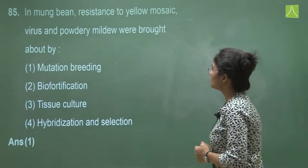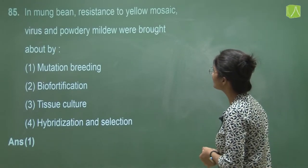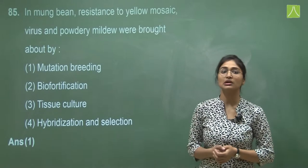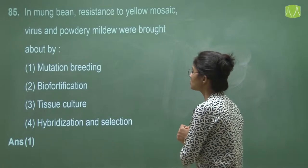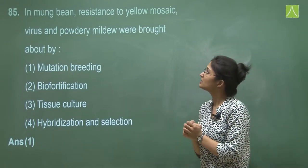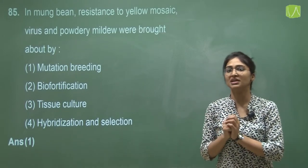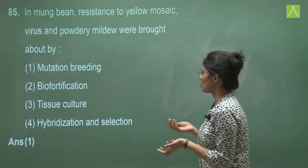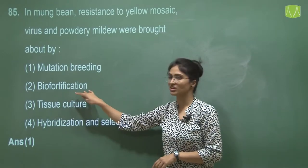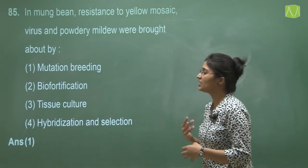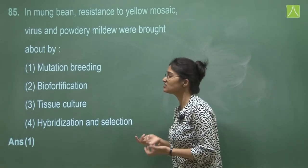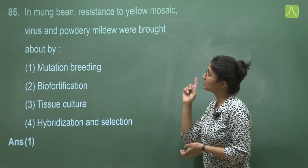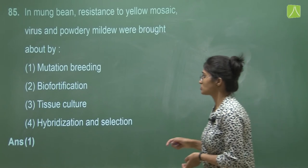Question 85 asks how resistance to yellow mosaic virus and powdery mildew was brought about in Moongbean. Option one is mutation breeding — this is correct, as specific resistance traits are created and selected through mutation. Option two is biofortification, which is enrichment of food's nutritional value — not the answer. Option three, tissue culture — not the answer. Option four, hybridization and selection — but in the case of Moongbean, this was solely done by mutation breeding. The answer is option one.